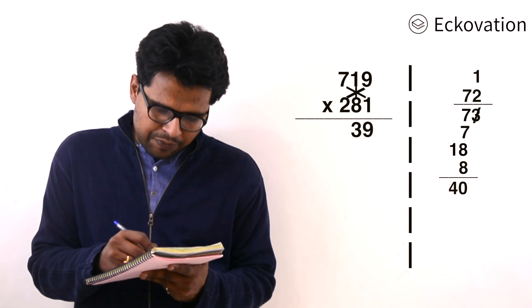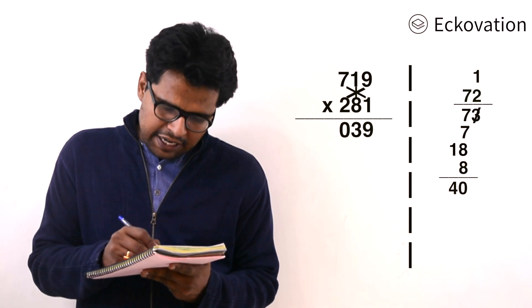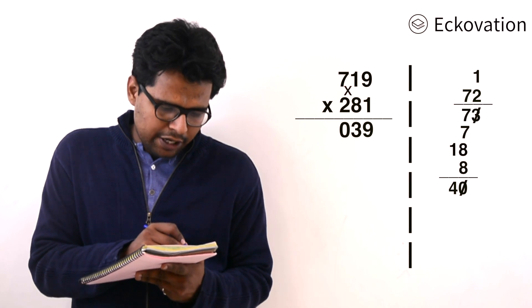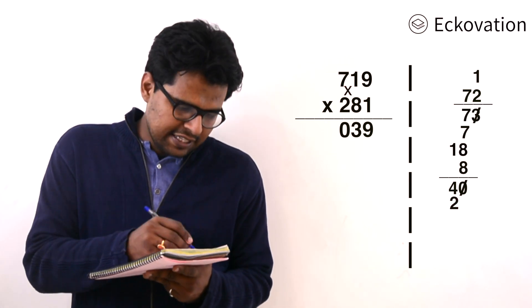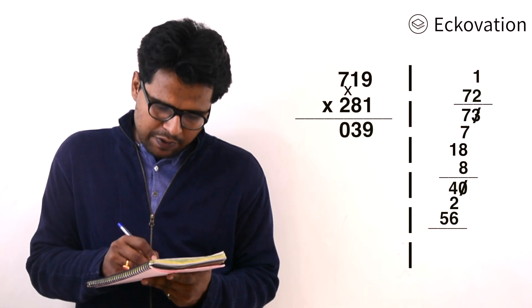Now we come to cross multiplication with 2 and 8. 2 into 1 is 2, 7 into 8 is 56. Again, we'll do the summation and get 62 total. We'll write 2 and carry 6.